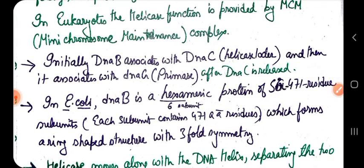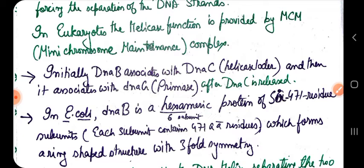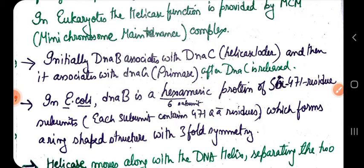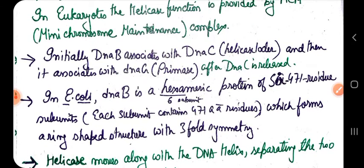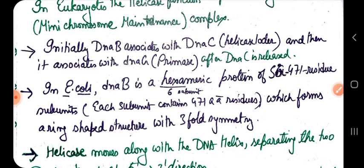Initially DnaB associates with DnaC (helicase loader), and then it associates with DnaG (primase). After DnaC is released due to ATP hydrolysis, its main function was to help DnaB bind and properly accommodate the single-stranded DNA at the 13-mer region. DnaC helps DnaB bind to the single-stranded DNA at the AT-rich region.